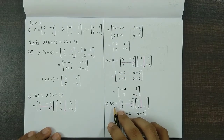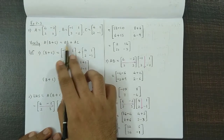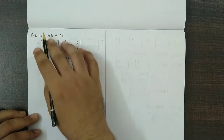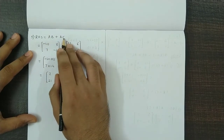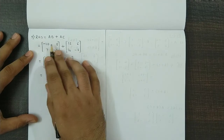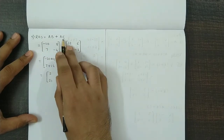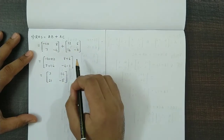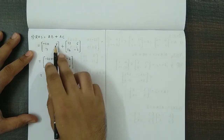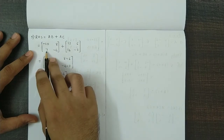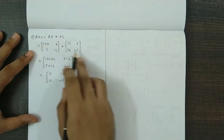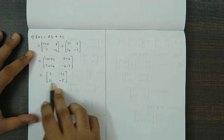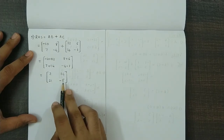Now we have obtained AB and AC and we proceed to the right hand side by adding the two matrices. AB is minus 10, 8, 7, minus 4 and AC is 12, 6, 14, minus 1. Adding corresponding elements: minus 10 plus 12, 8 plus 6, 7 plus 14, and minus 4 minus 1. So the right hand side matrix is 2, 14, 21, minus 5, which matches the left hand side.